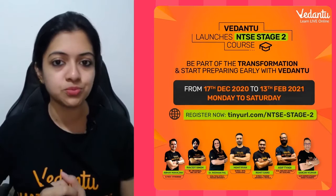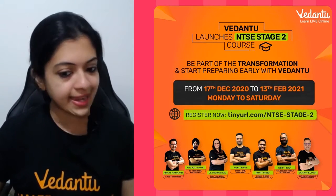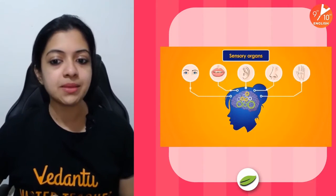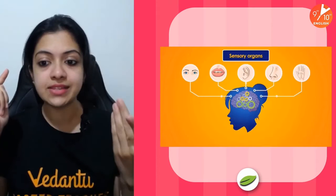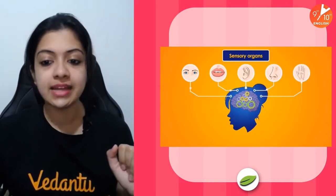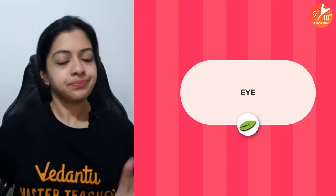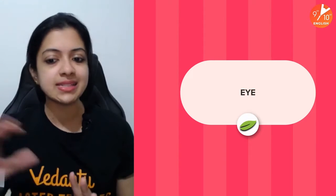Coming to the topic of sense organs, the major sense organs are the organs of vision, hearing, smell (nose), touch, and taste. These are the five major sense organs. The main ones we are going to discuss today are the eye and the ear.